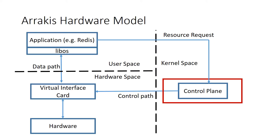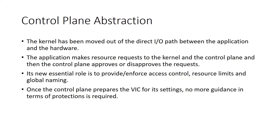Now that we covered the virtual interface card, let's move to the control plane. Now that the kernel has been moved out of the direct IO path between the application and the hardware, its responsibilities are slightly modified. The application now has direct communication with the virtual network interface card. There are still some responsibilities the kernel needs to provide, and it acts more like the control plane — similar to the control plane in network switches.